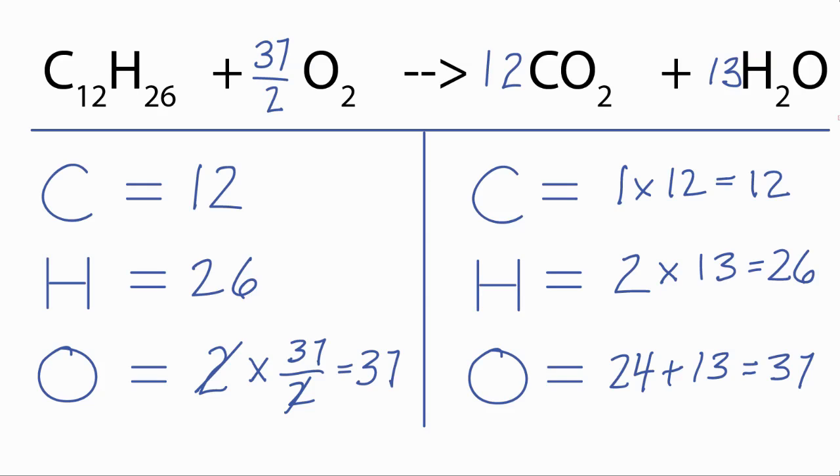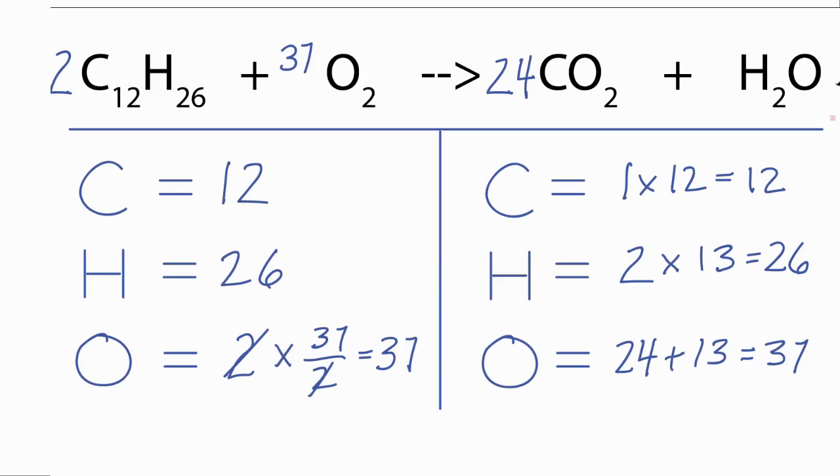If you want whole numbers, you simply multiply the entire equation by 2. So 2 times the 1 there, that's 2. 2 times 37 over 2, the 2's would cancel out, leaving us with 37. 2 times 12 is 24. And 2 times 13 is 26. So that's the balanced equation.